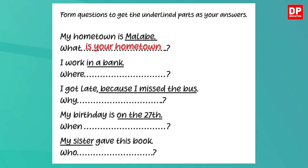Look at the next one: I work in a bank. 'Bank' is the word underlined and the question word is 'where.' As this is in simple present tense, you have to add the verb 'do' when forming the question. Like before, you have to change the pronoun 'I' to 'you' as the question is asked by someone else. So the question is: where do you work?